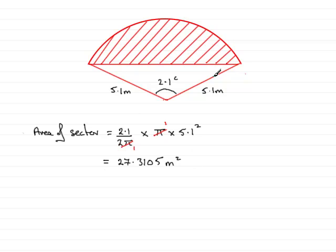Now we work out the area of the triangle. Area of triangle equals half the product of the two sides - that's 5.1 times 5.1, or 5.1 squared - times the sine of the included angle, which in this case is 2.1 radians. Make sure you put your calculator in radians mode. Working this out in radians mode gives 11.2260 and so on, in meter squares.